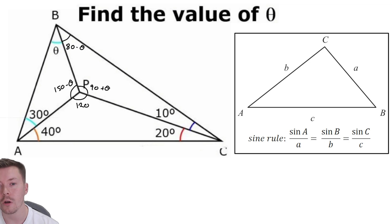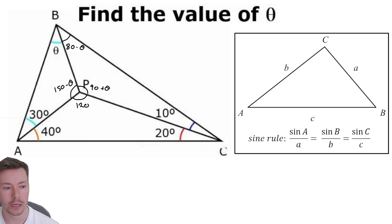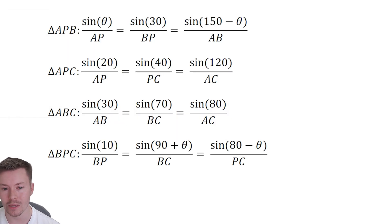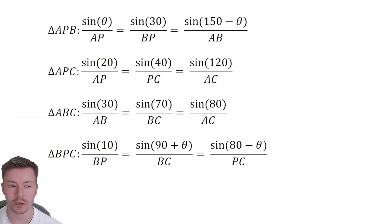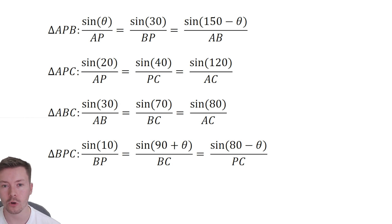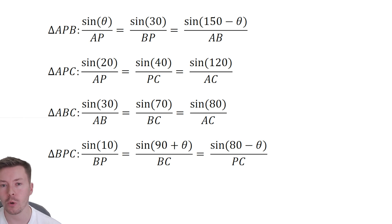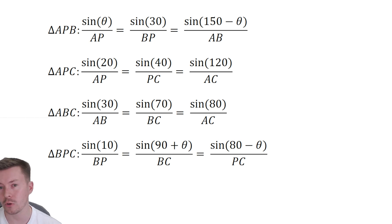I've now worked out all of the sine rule equations from the different triangles, and they give me these results. Some of them have 150 minus theta, 90 minus theta, or 80 minus theta in them — that is a bridge I'll cross later. We need to have an idea of what to do when scenarios like 90 plus theta arise.